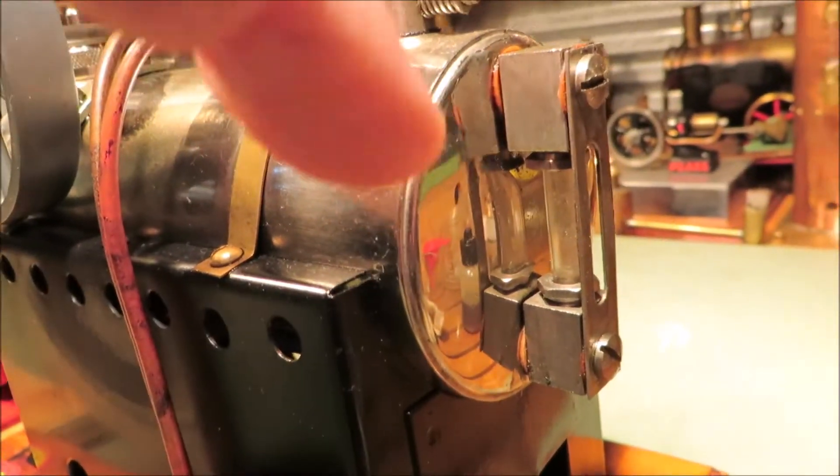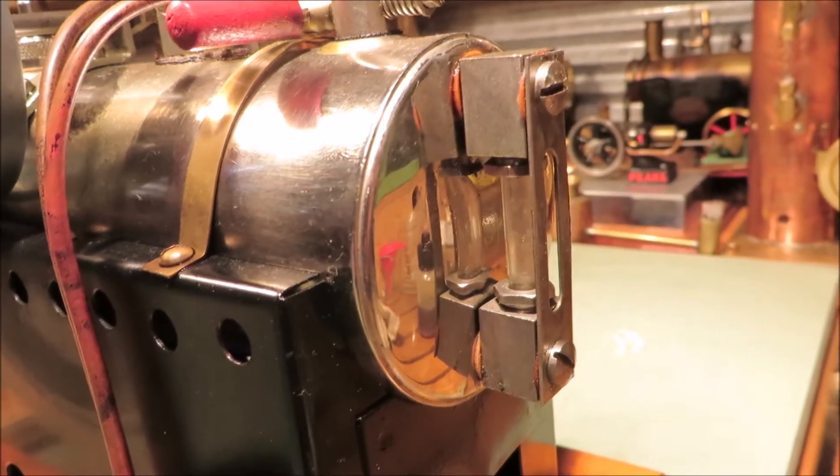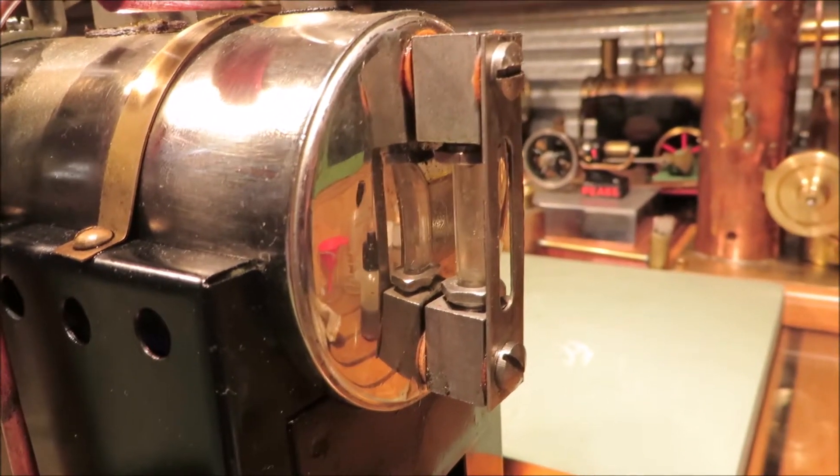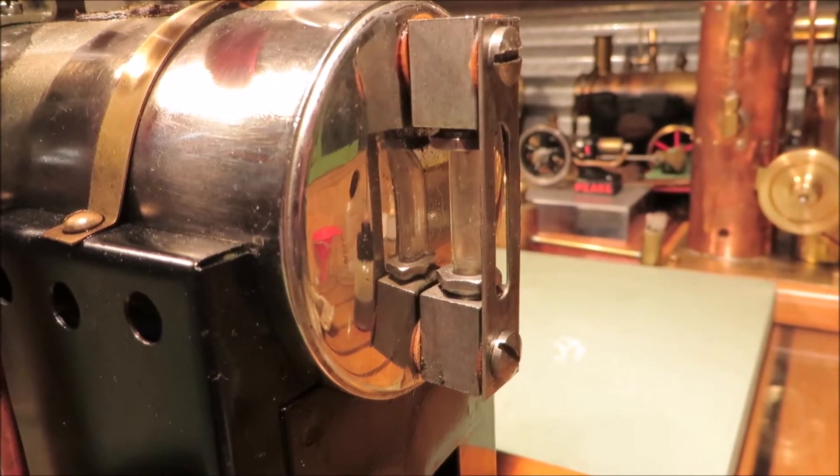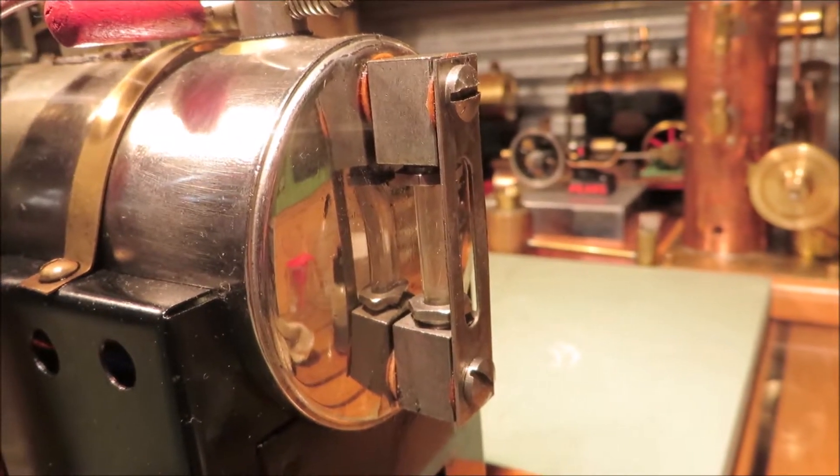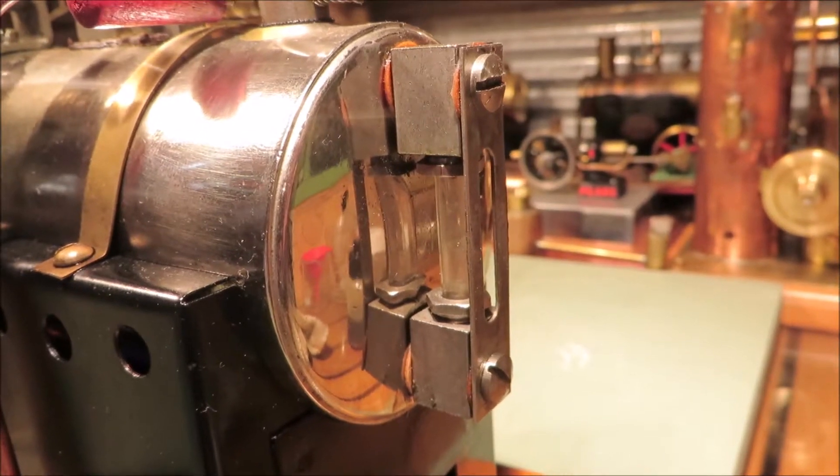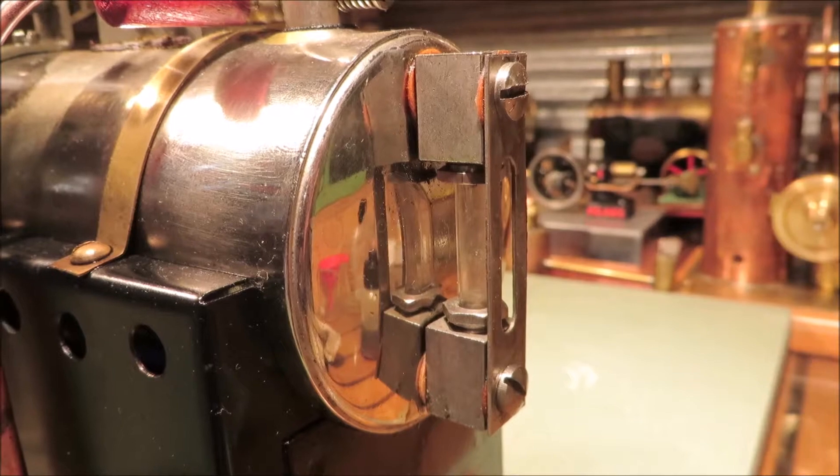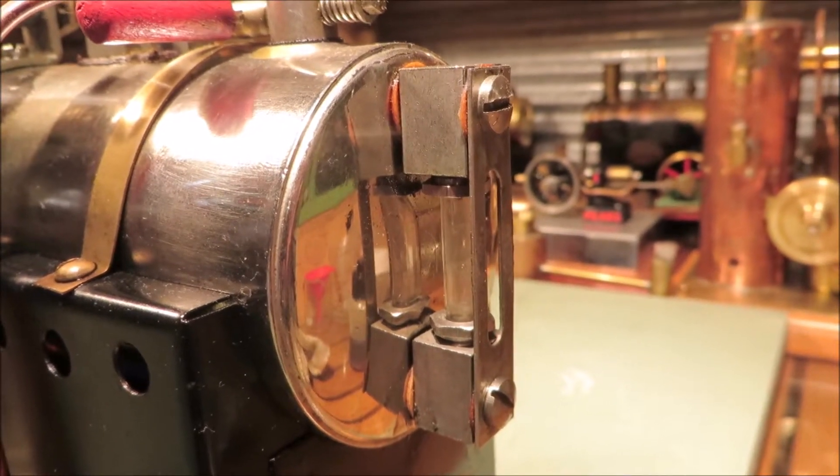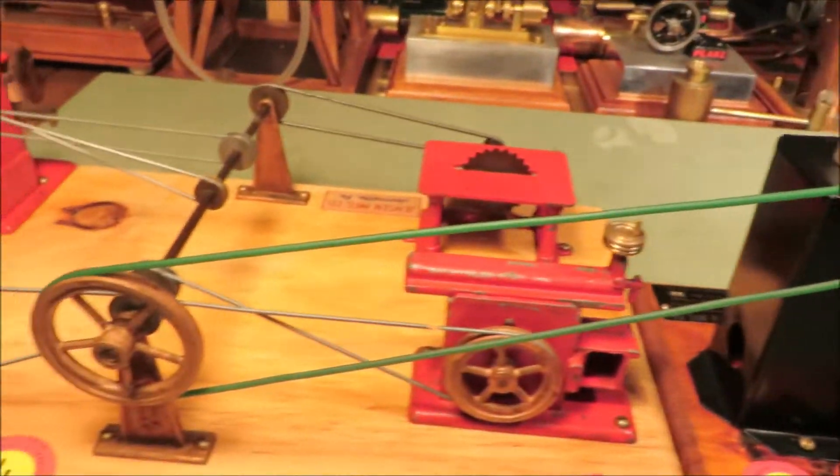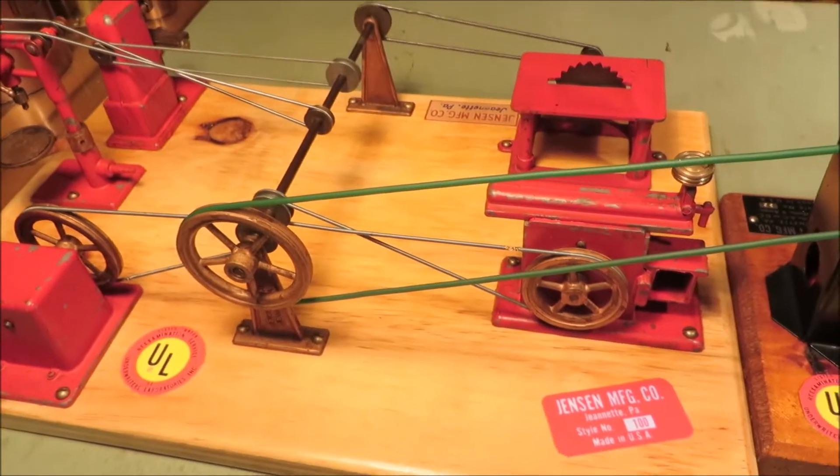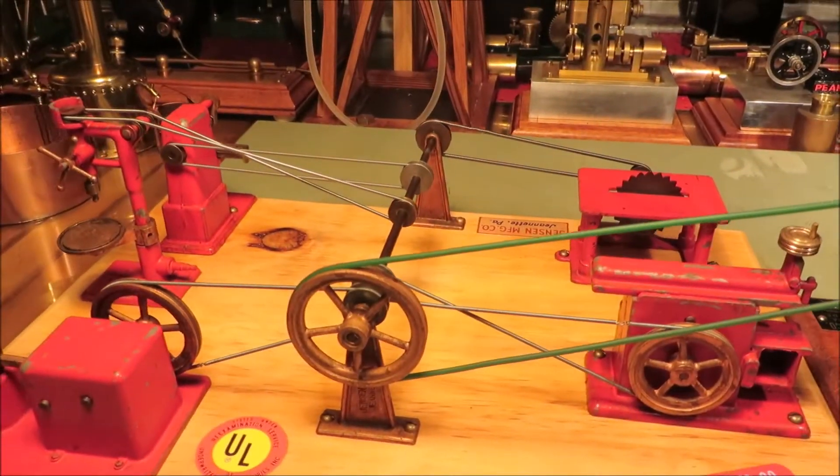This came leaking like I think most of these older Jensen sight glasses did, but I do like them. I think I like them better than the round portholes, they just add a bit of old authenticity to these boilers. I'm going to see if it will run this Jensen 100 workshop.